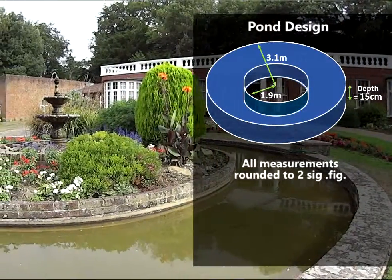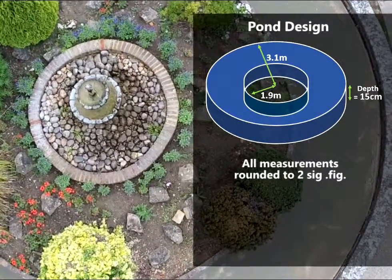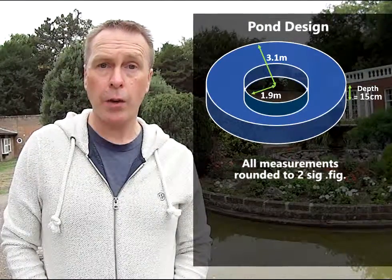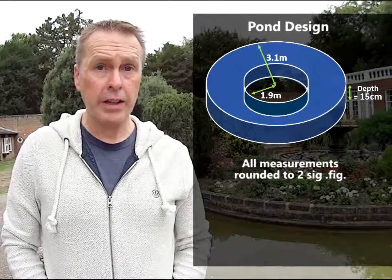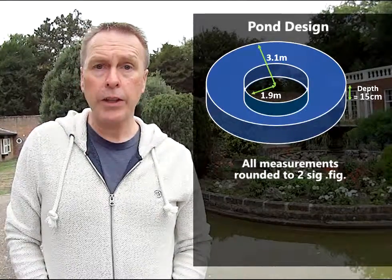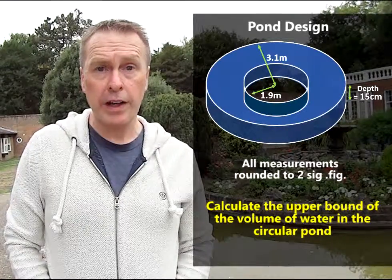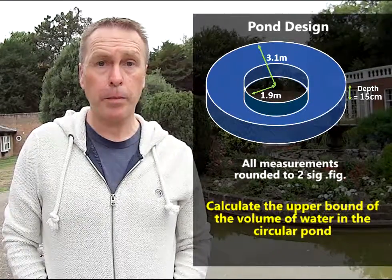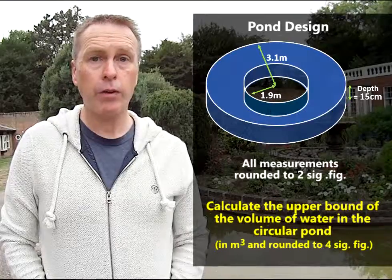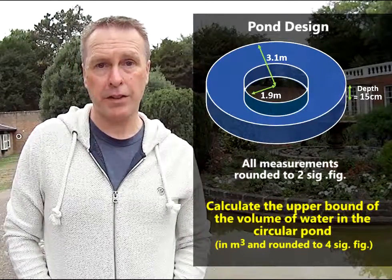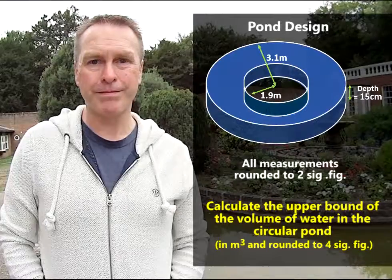So the question is this: when the gardener needs to change the water pump, he or she really needs to know the maximum volume of water inside the pond. Can you calculate the upper bound of the volume of water inside the circular pond, giving your answer in metres cubed and rounded to four significant figures? Use some maths and help me solve this problem.